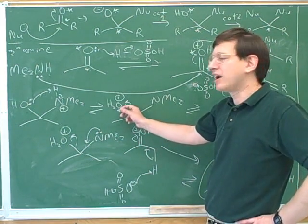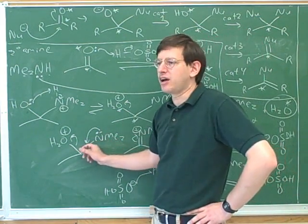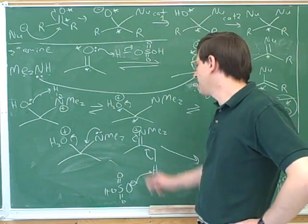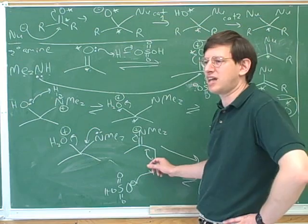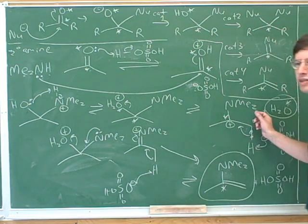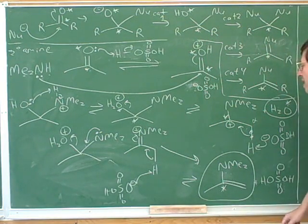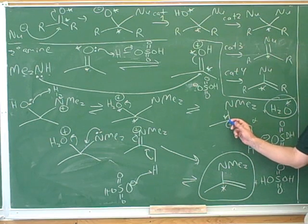So just because your mechanism doesn't look exactly the same as the answer key doesn't mean it's wrong if they only differ by resonance. So we can either show the water leaving by itself or we can show the nitrogen kicking it off with the lone pair. But if you show the nitrogen kicking it off, you're just going to have to get rid of that pi bond in the very next step over here. So I think it's simpler to do it the way we did up here. However, you should keep in mind...